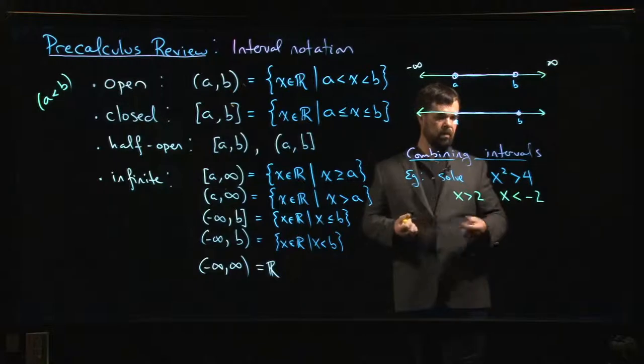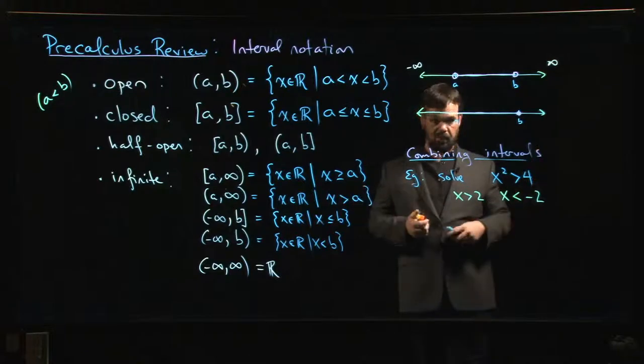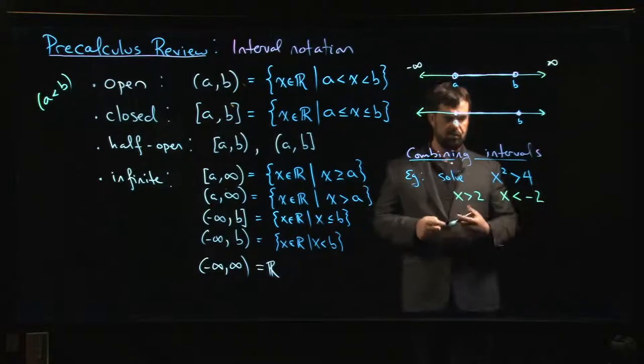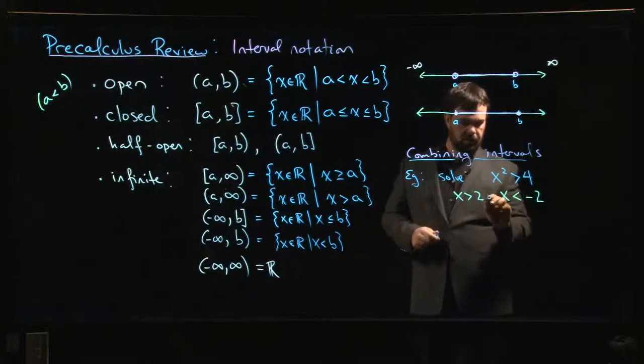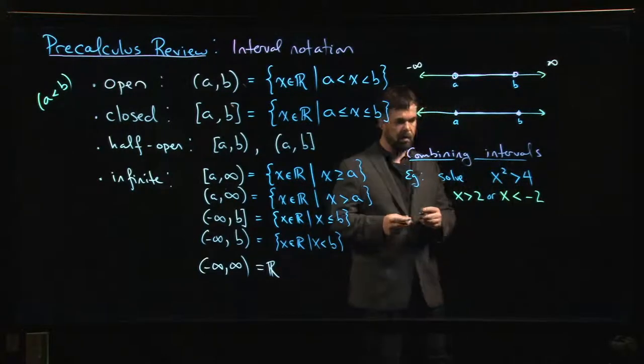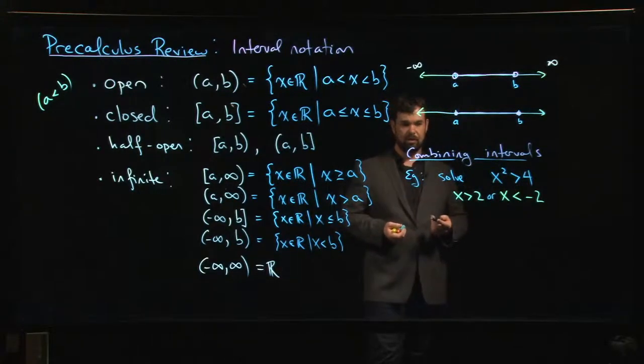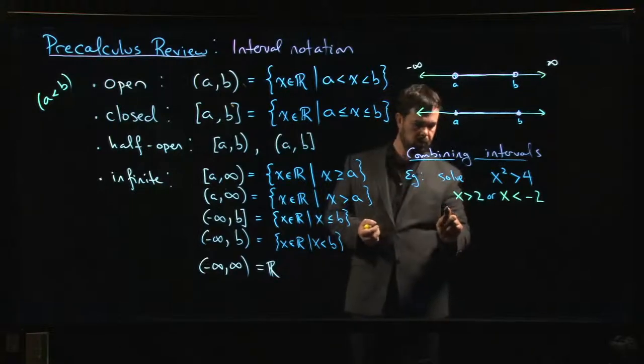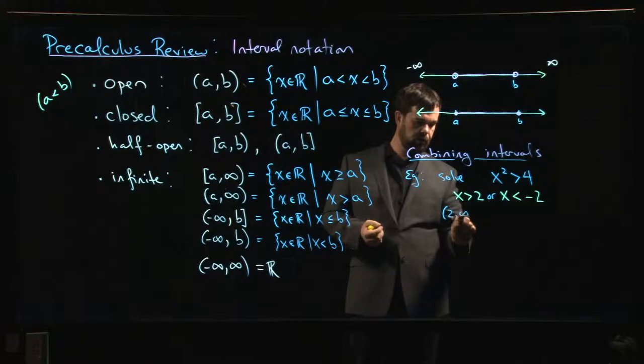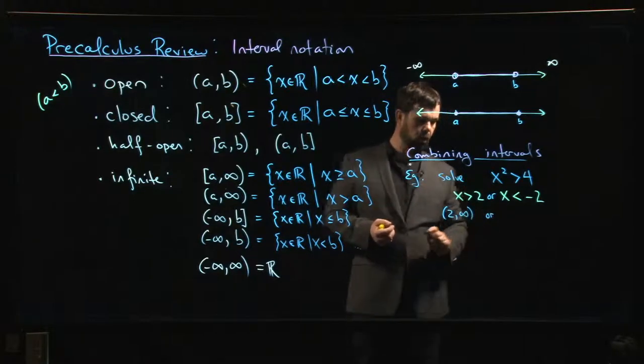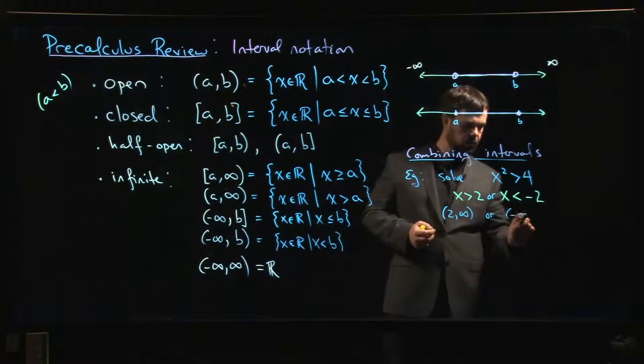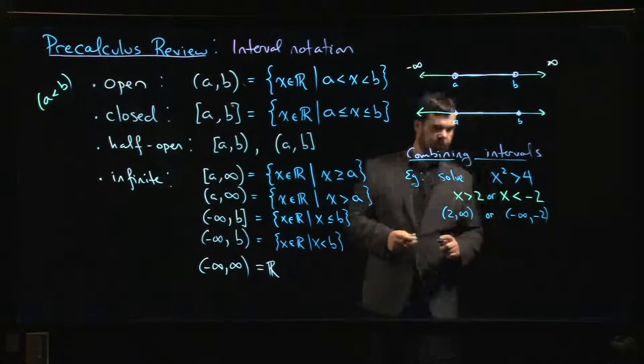Those are all in there - minus 3, minus 4, minus 7.5. So we could have one of those two possibilities. Now you think about how do you write those as intervals? We would say that we could have the interval from 2 to infinity, or we could have the interval from minus infinity up to minus 2.